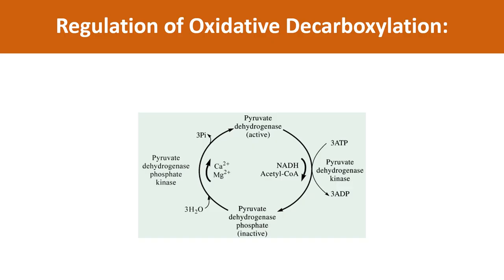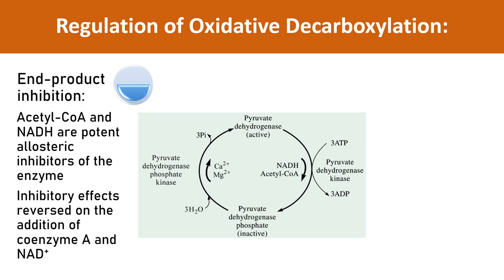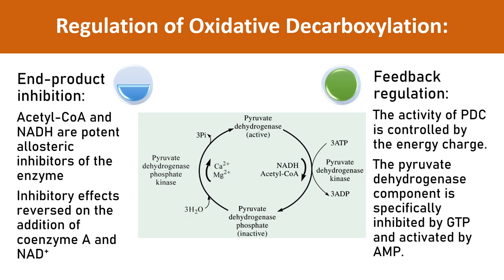Oxidative decarboxylation of pyruvate to acetyl coenzyme A is an irreversible reaction, and it is regulated by two different mechanisms. The first is allosteric inhibition: the products acetyl-CoA and NADH are potent allosteric inhibitors of the pyruvate dehydrogenase complex. The second is feedback regulation based on energy charge: the pyruvate dehydrogenase component is specifically inhibited by GTP and activated by AMP.